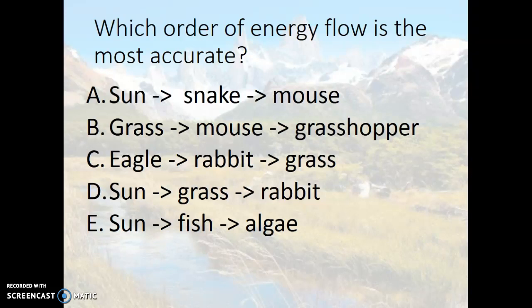Let's check our understanding. Which order of energy flow is most accurate? A. Sun to snake to mouse, B. Grass to mouse to grasshopper, C. Eagle to rabbit to grass, D. Sun to grass to rabbit, E. Sun to fish to algae. The correct answer is D — sun to grass to rabbit — because it follows the food chain where energy decreases as it moves up.